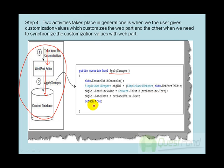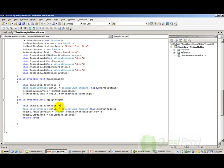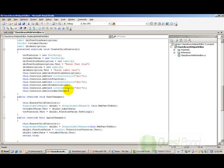The second activity is that we also need to sync the content database data with the webpart editor. Whenever your SharePoint page is loaded, the webpart editor needs to fetch information from the content database based on the user and apply it to the webpart. For this, we need to override the SyncChanges method. In our custom webpart editor, the SyncChanges method moves the data from the webpart object to the text box values, keeping the webpart in sync.